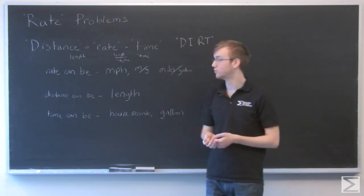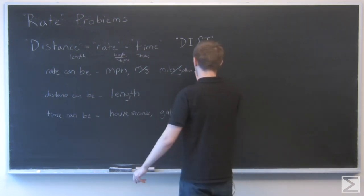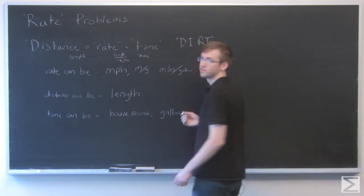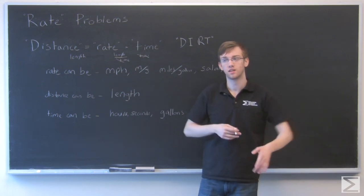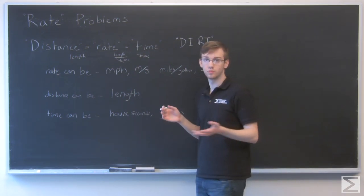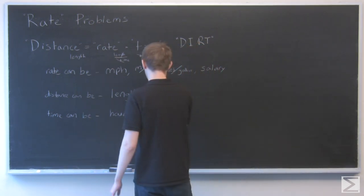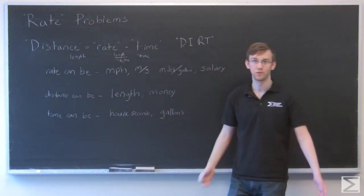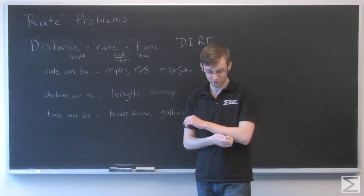Another example of rate would be your salary. Salary is you're paid, say, $7.15 an hour. So in that case, the distance would be the amount of money you made, and the time would again be hours or minutes or days or however you're paid.